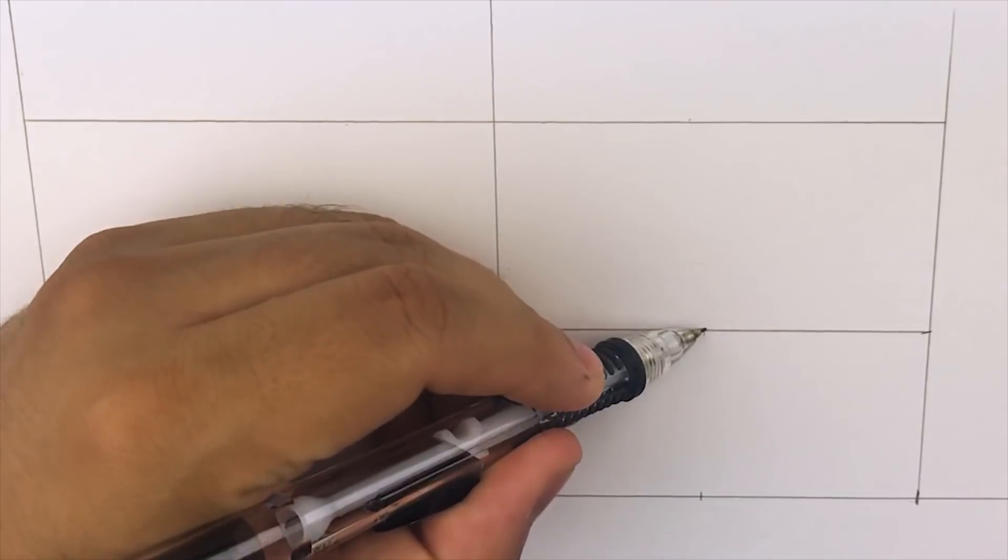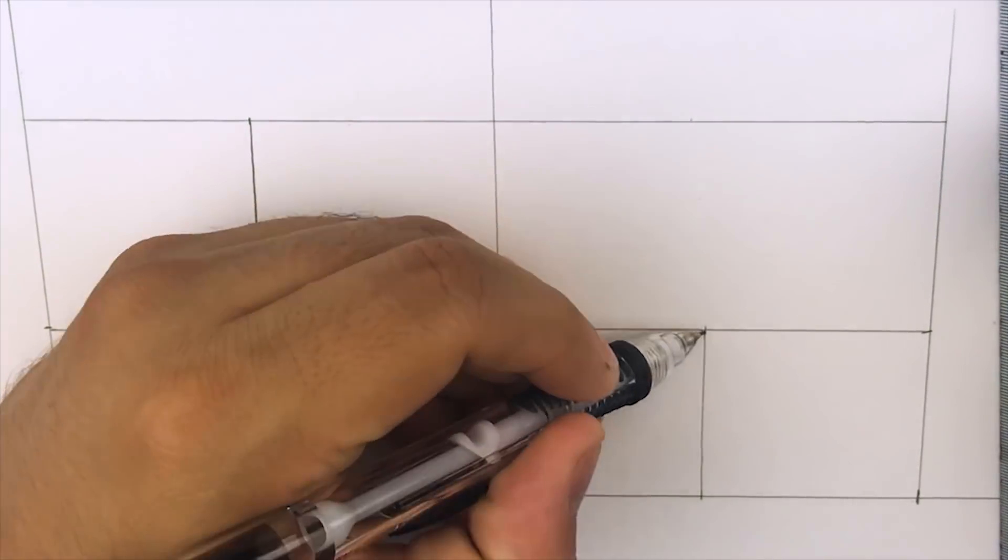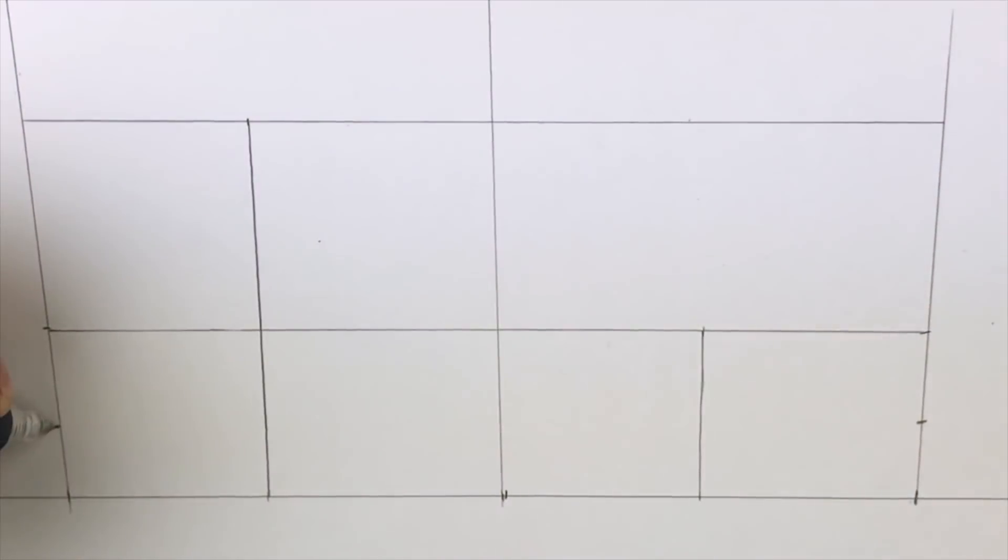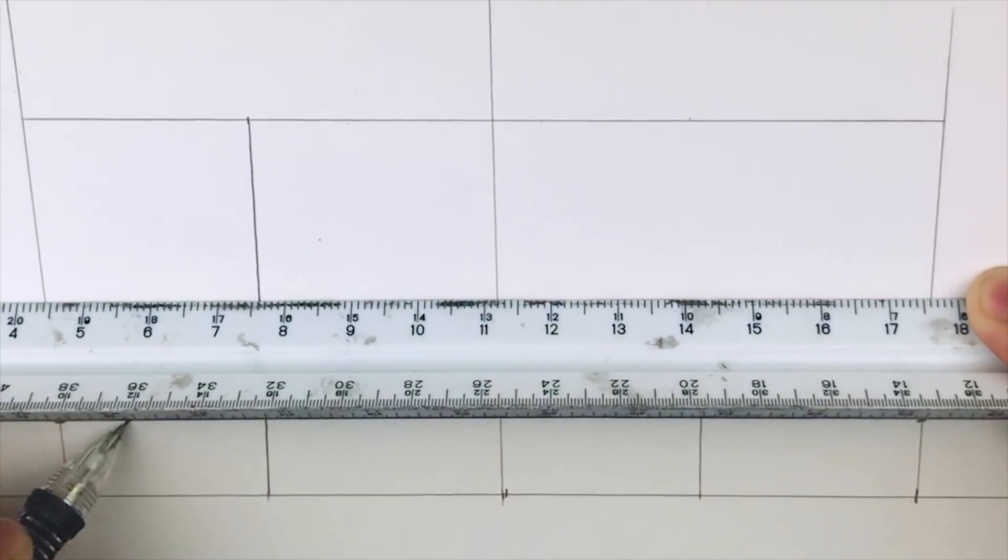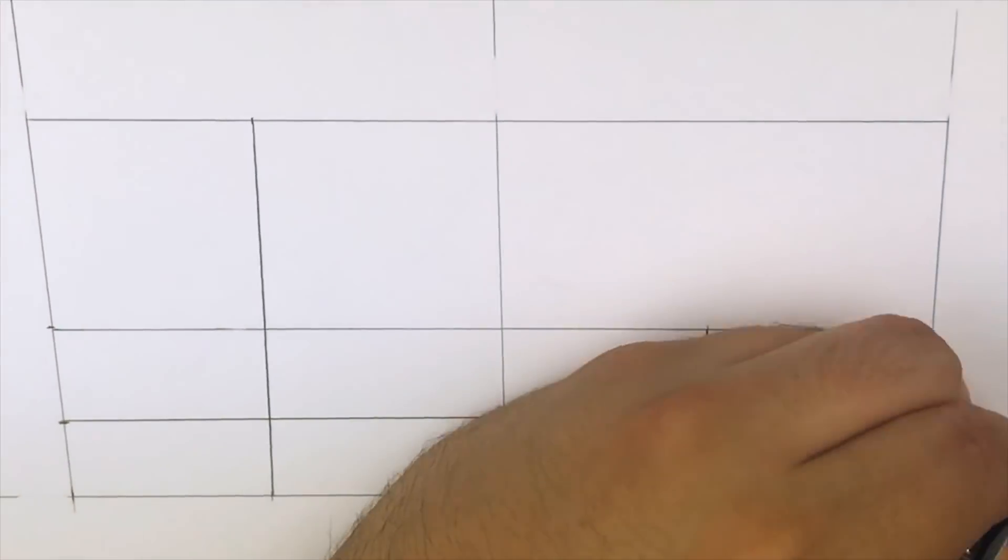Then we're going to add a vertical line separating the bottom right-hand quadrant into halves, as well as that initial left box that we made into halves. Finally, we're going to add one horizontal line dividing the bottom quadrants into halves. This will give us all the guidelines we need to draw the rest of the shoe.